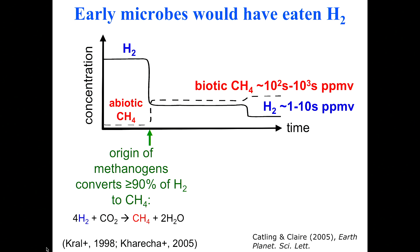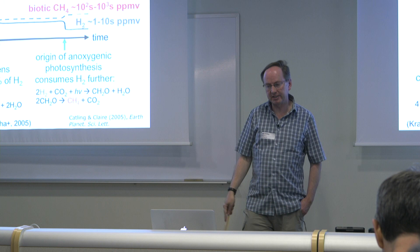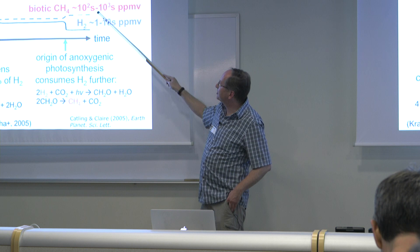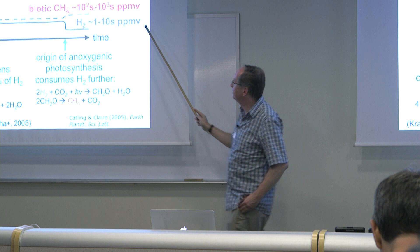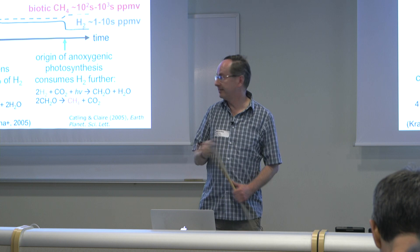Later, life developed anoxygenic photosynthesis — a form that doesn't generate oxygen but uses H2S instead of H2O. These microbes pull hydrogen down, make organic matter, and that can be processed into methane. Going through the numbers, biotic methane levels would rise to hundreds or thousands of parts per million, compared to today's 1.8 ppm, while hydrogen would be pulled down to just a few parts per million. As biology professor would say: biology abhors spare food sitting around.